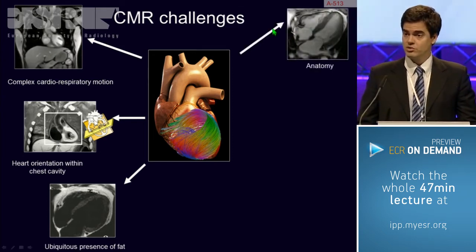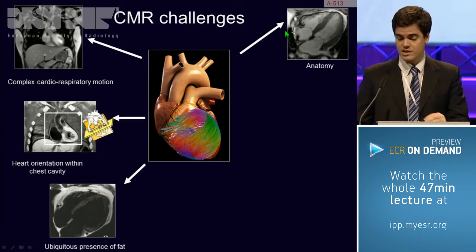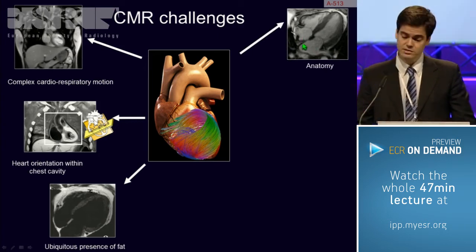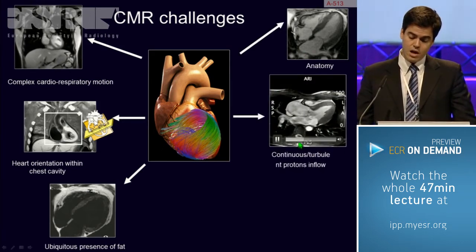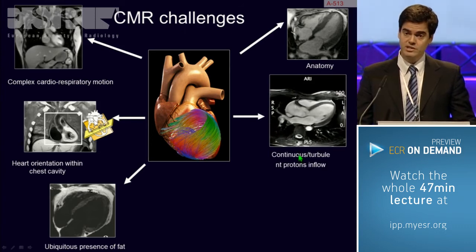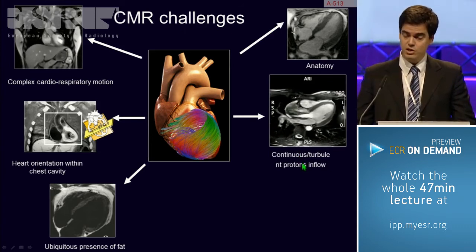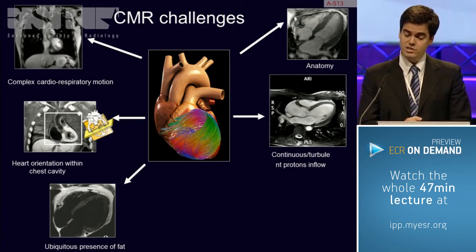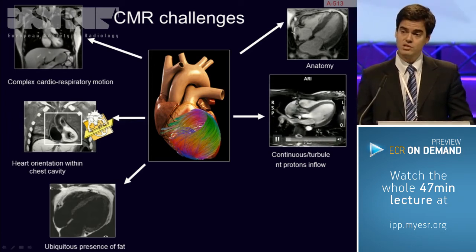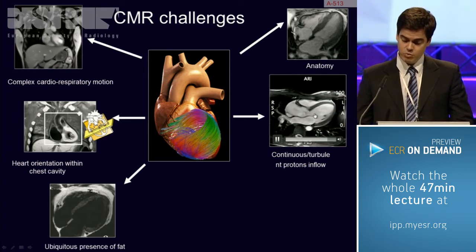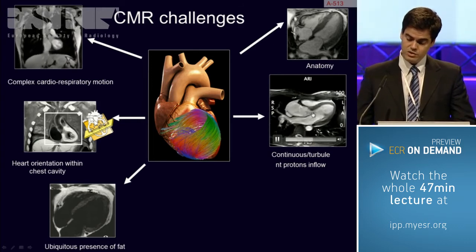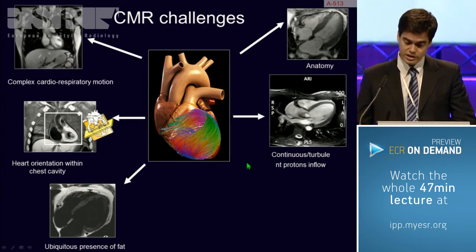We already heard about the anatomical pitfalls of the heart, and I will show you different cases. This is a prominent crista terminalis, which you already heard about in the beautiful case showed by Gorka previously. There is a third point which is MR-related, depending on the continuous turbulent flow and proton inflow within the cardiac cavity. This causes turbulences and may cause artifacts that we can use to assess, for example, the presence of stenosis — as in this patient with sub-valvular aortic stenosis, where you see a dark rim artifact going in the direction of the systolic ejection murmur.